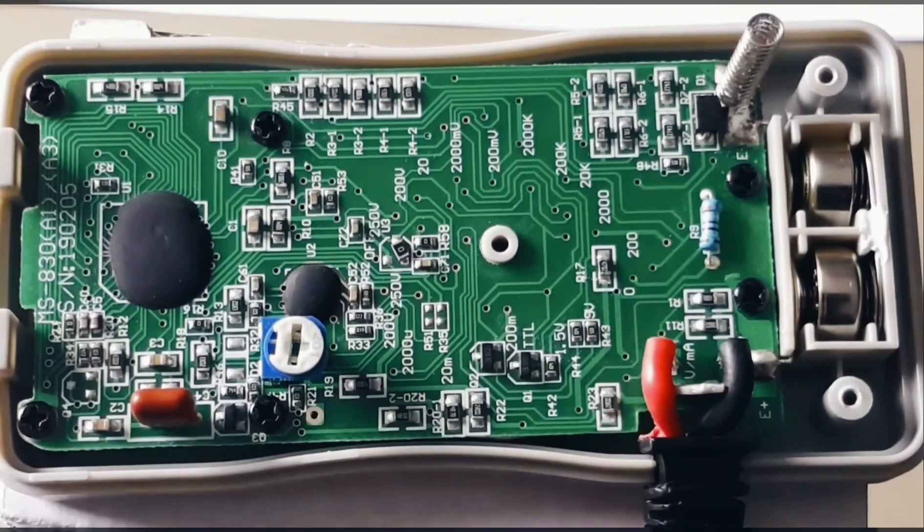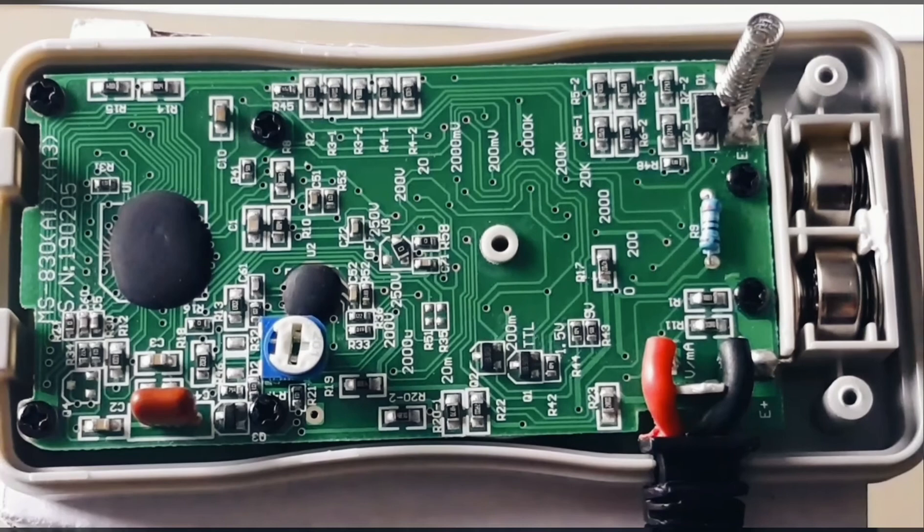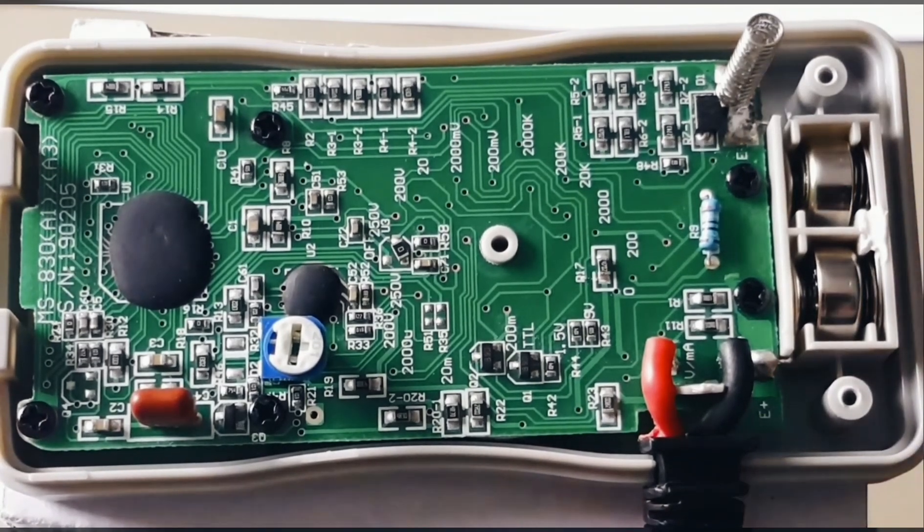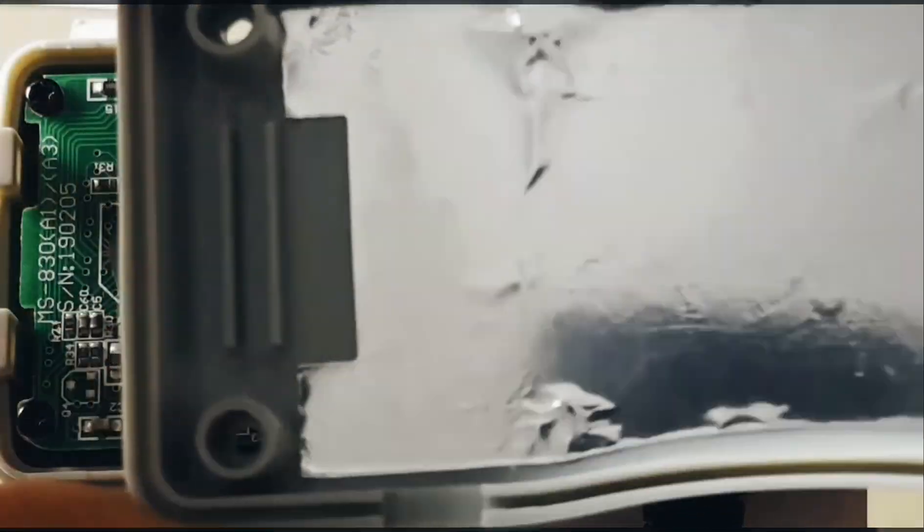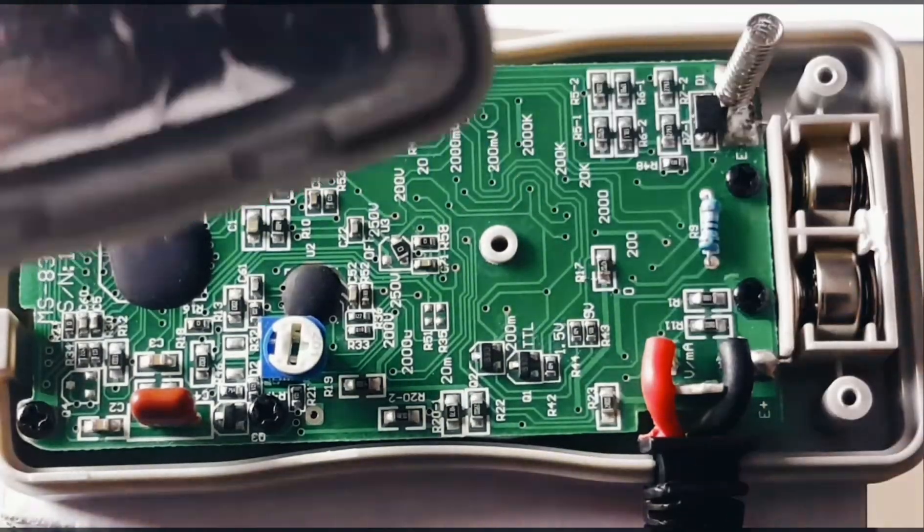Okay, we've got the back off. It was just two standard Phillips screws. Plastic threading, no metal inserts. Now surprisingly enough, there's quite a lot of shielding on the cover. So that's really nice to see. The shielding goes down the entire cavity of the multimeter. Really good to see Volt Craft.